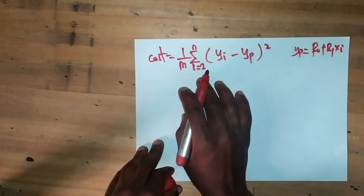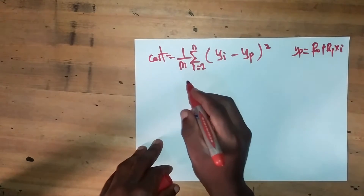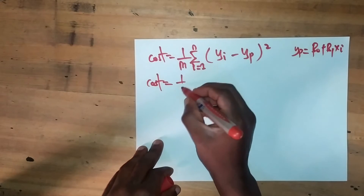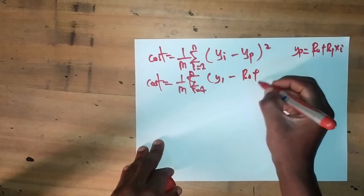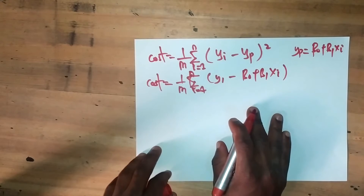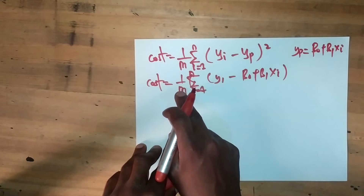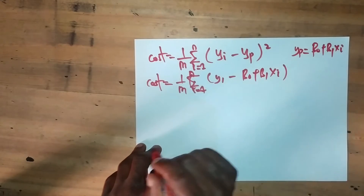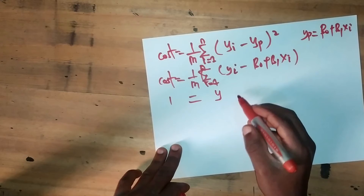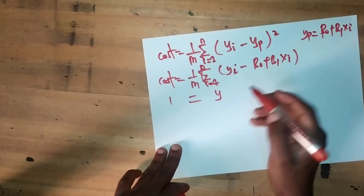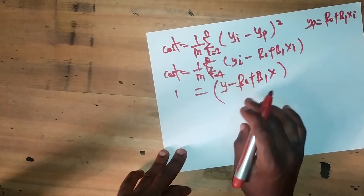We want to differentiate the cost function with respect to β₁ and β₀. To do that, let's express this formula: the summation from i equals 1 to n of (y actual minus (β₀ + β₁xᵢ)). In order to differentiate at a certain point, we ignore the summation sign and n because we are finding the derivative at a single point. Our cost function now becomes (y minus (β₀ + β₁x)) squared. This is the formula we want to differentiate.